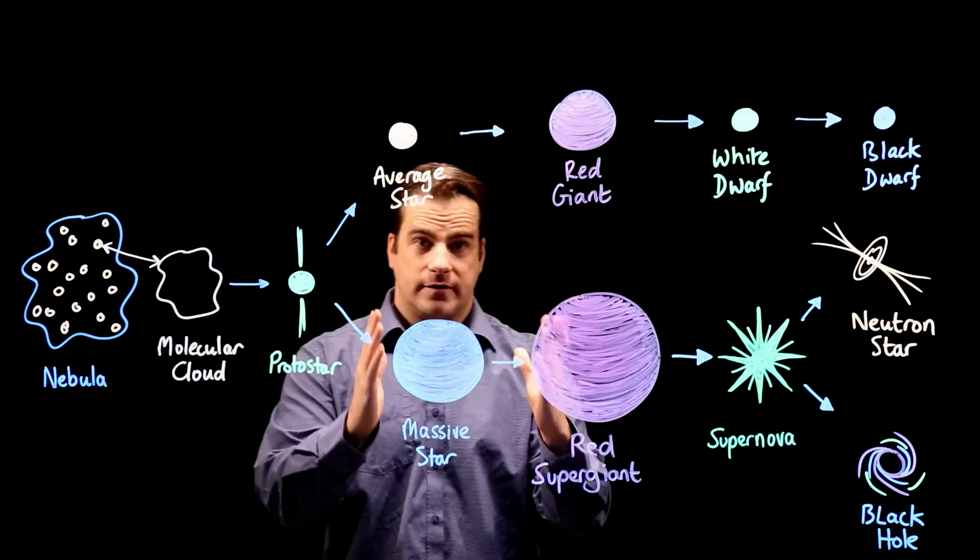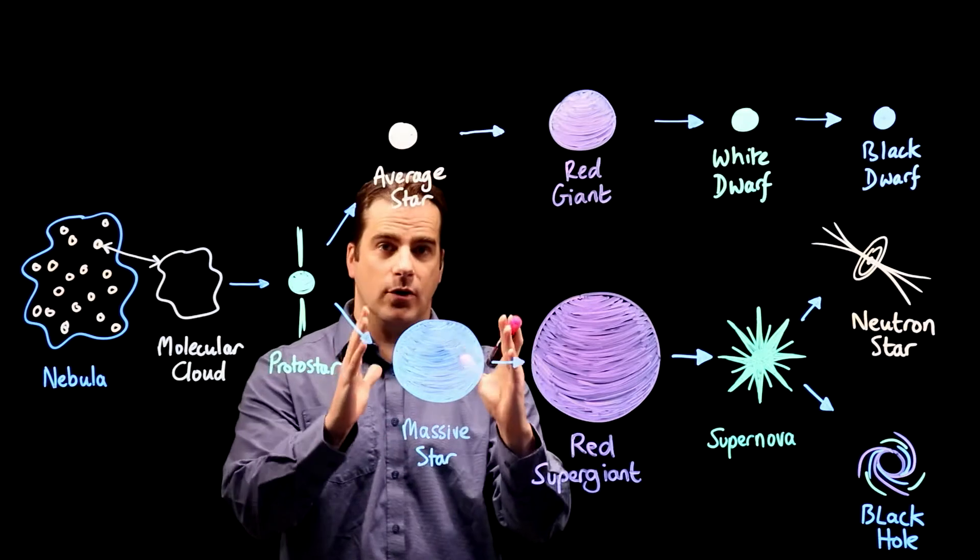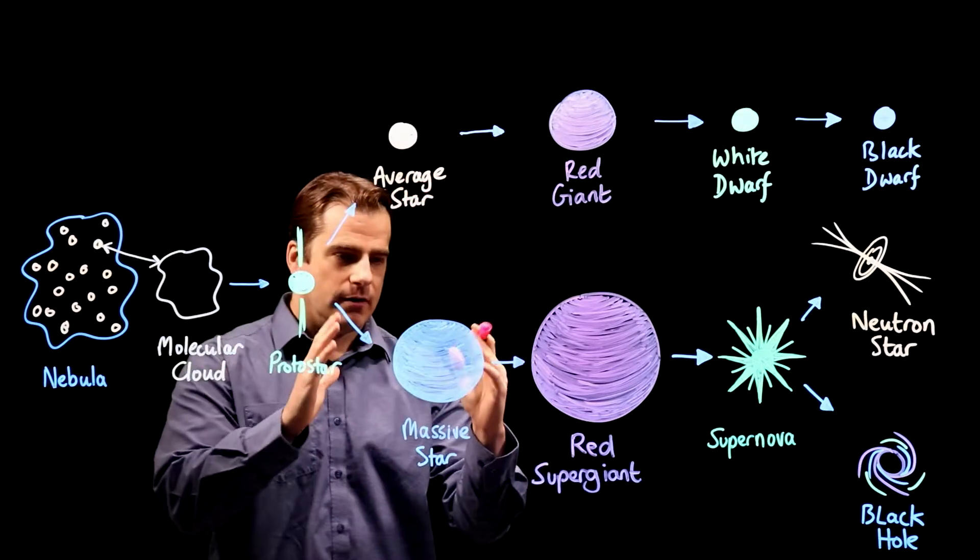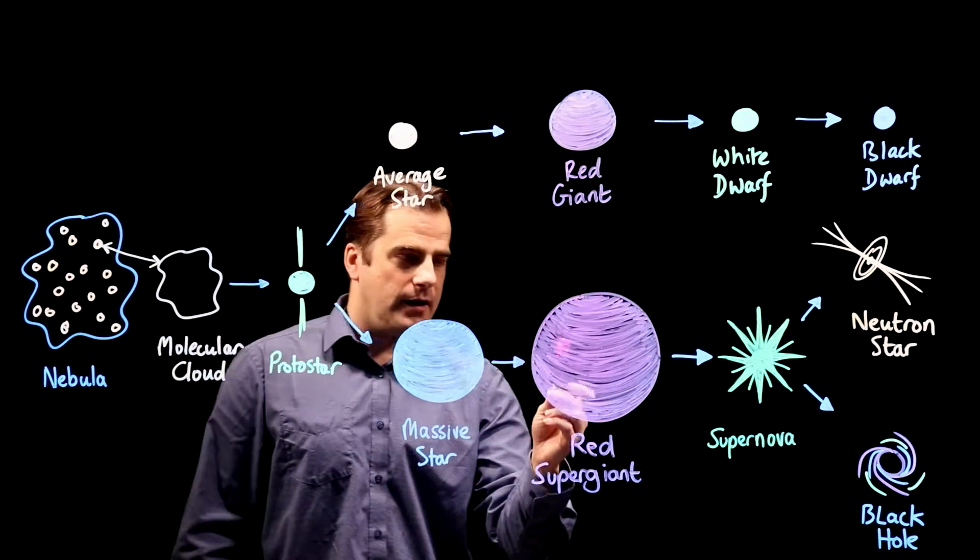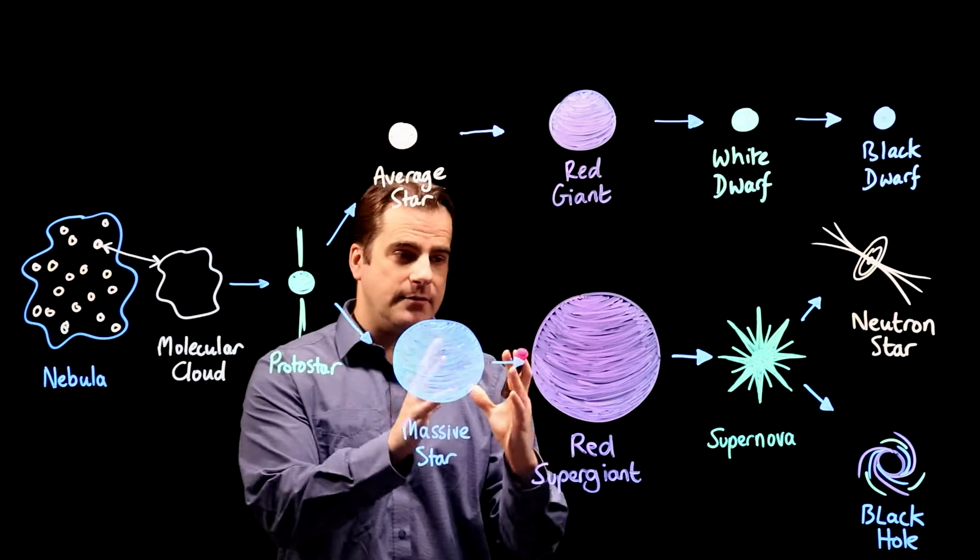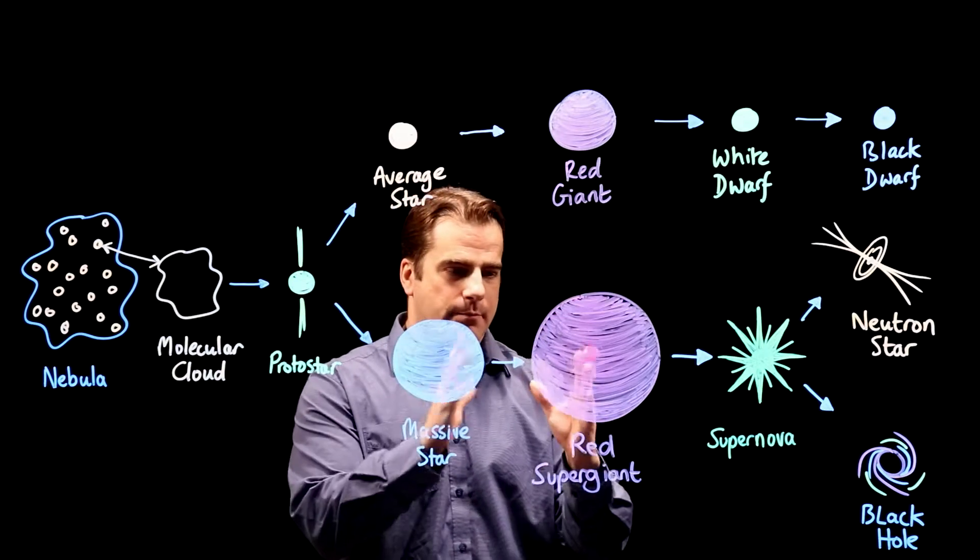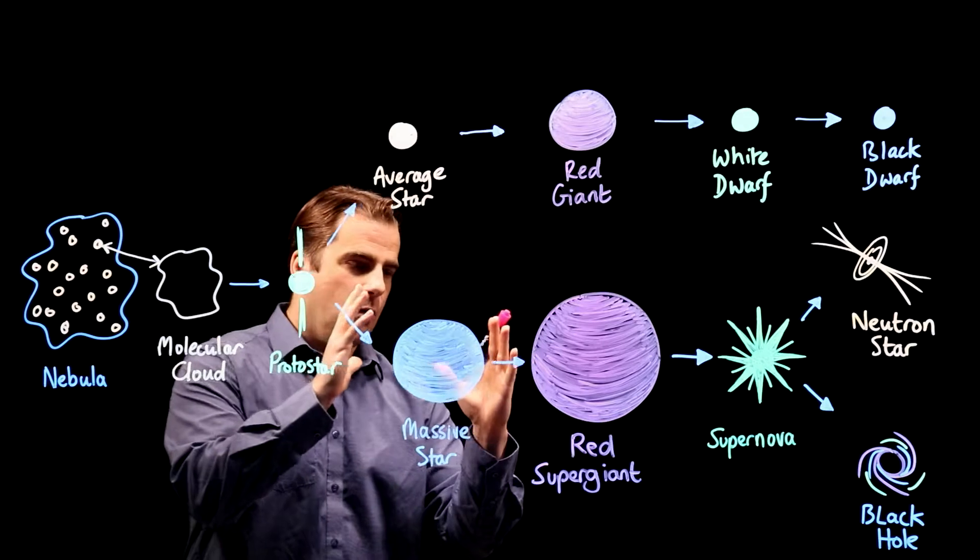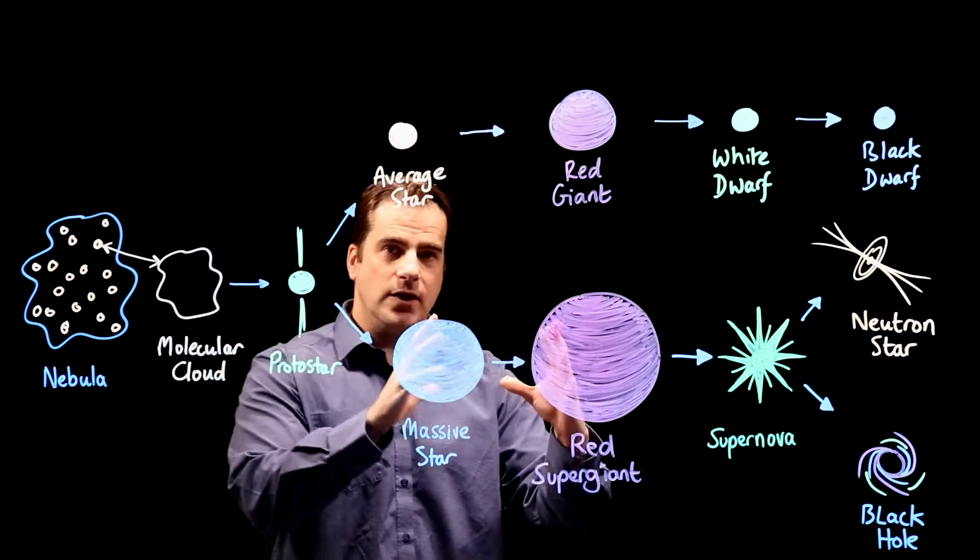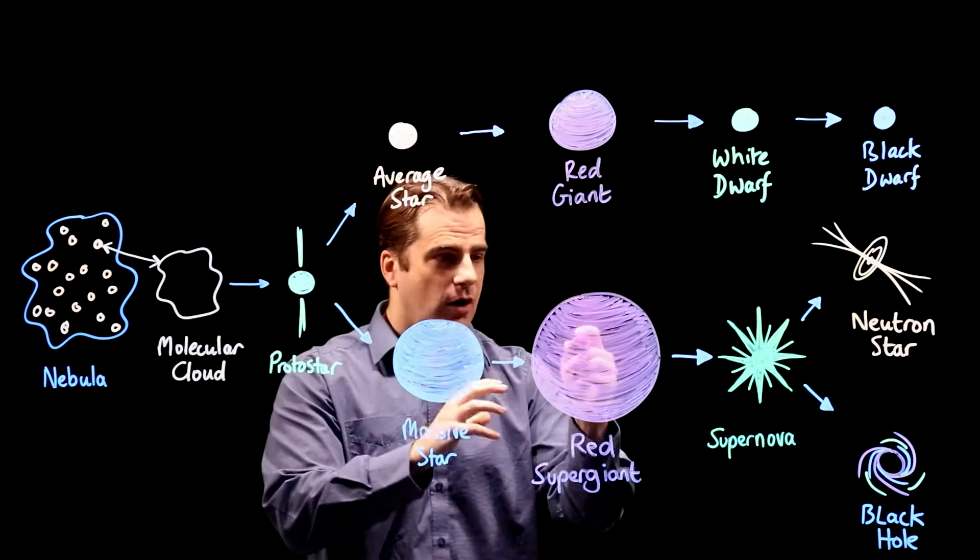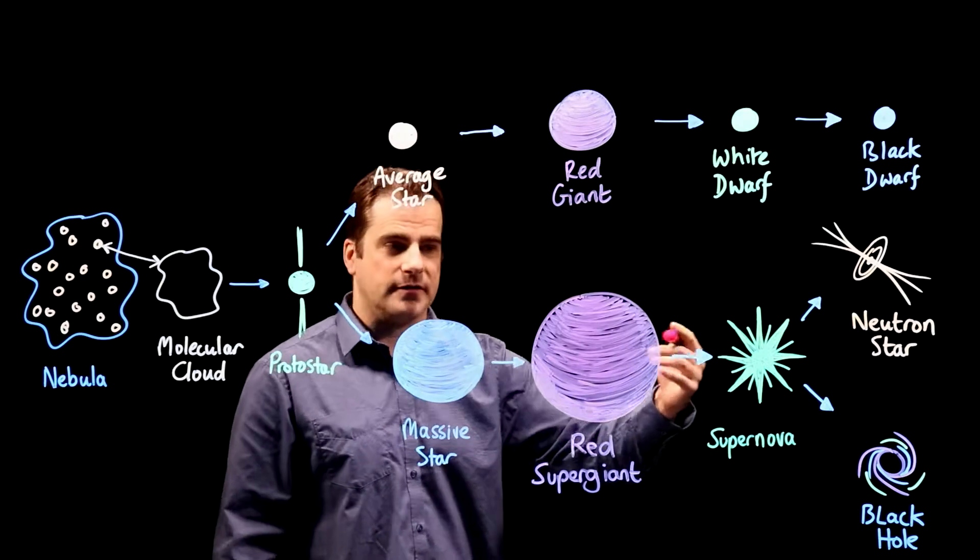So same thing as before, when it's used all its hydrogen, when it's fused all hydrogen into helium, it will start to expand as the helium starts to fuse to form heavier elements. Now with the more massive stars, it can continue to fuse. It's so hot and dense in the core, it can continue to fuse its elements into heavier and heavier ones.